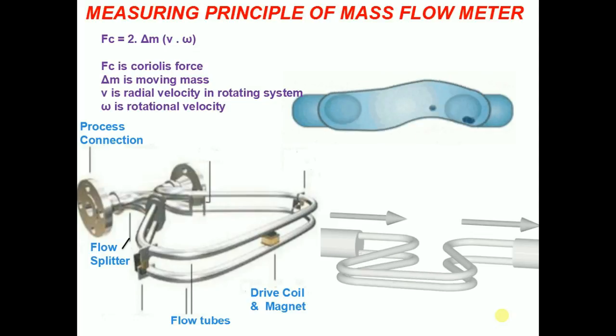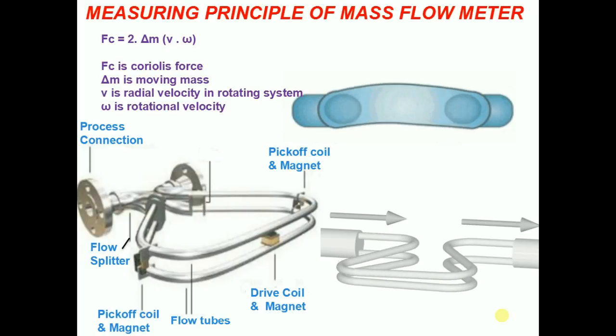Magnet and coil assemblies, called pick-offs, are mounted on the flow tubes.